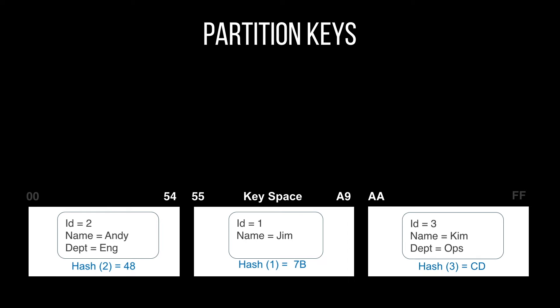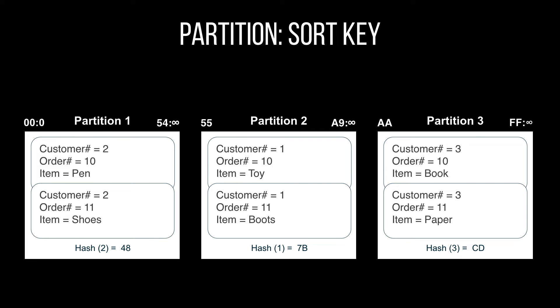When you query your database, you provide the partition key and the database knows which physical node to look at for the data. This is what makes NoSQL databases very fast at retrieving data. When you include the sort key, the process is similar: Dynamo uses the partition key to fetch from the right partition, and within that partition all items sharing the same partition key are sorted by the sort key so you can find the particular item inside the partition.